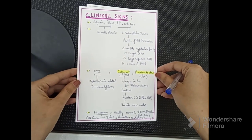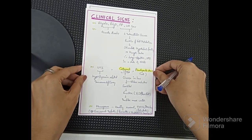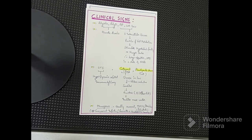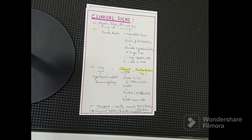Now we will discuss the clinical signs of diabetes mellitus. The most common are polyuria, polydipsia, polyphagia, and weight loss. Polyuria and polydipsia occur because of osmotic diuresis — elevated blood glucose level spills into the urine, causing osmotic diuresis.